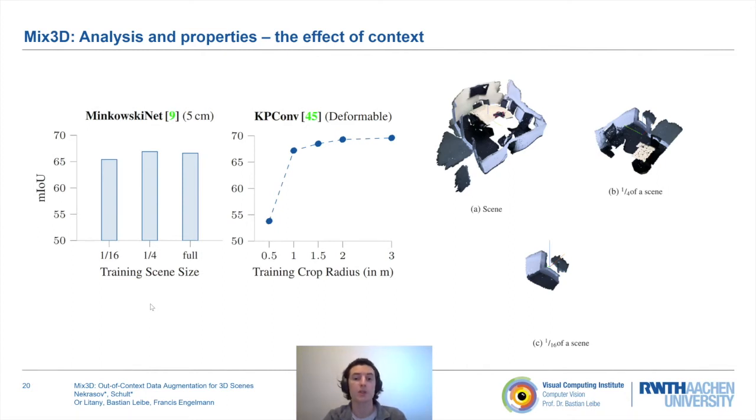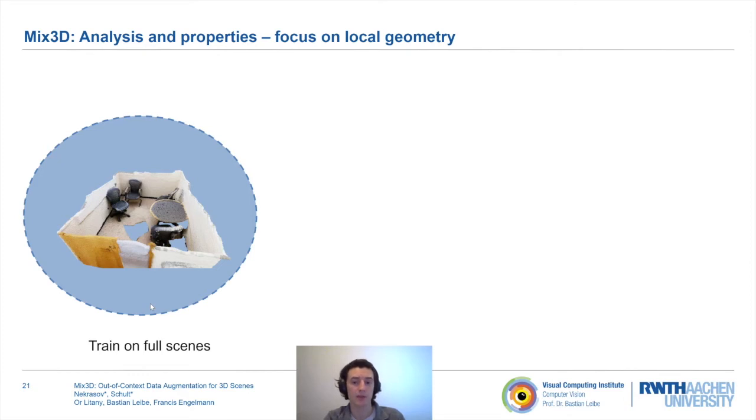Next, we show that models trained with Mix3D are less reliant on context information, and make better use of local structures, alleviating the context-overfitting problem. For this experiment, we train models with and without Mix3D on full-scanned training scenes. However, at test time, we simulate missing context by showing only isolated objects to the trained network.